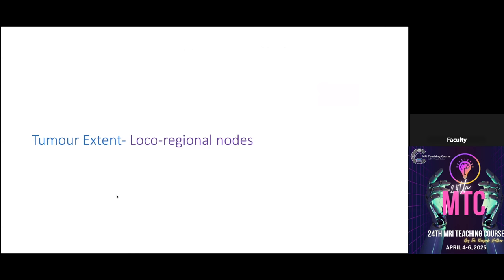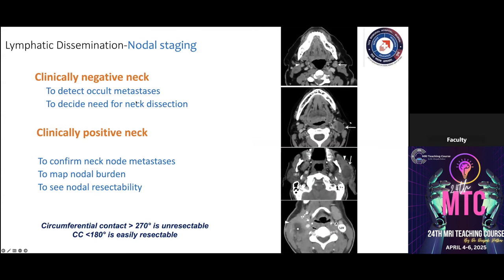For regional nodal assessment, nodes may be clinically negative — not palpable — where imaging looks for occult metastasis or helps decide on neck dissection. For clinically positive nodes, we confirm whether metastatic or reactive, map the nodal burden, assess nodal resectability, and note contact with the IJV or carotid vessels.